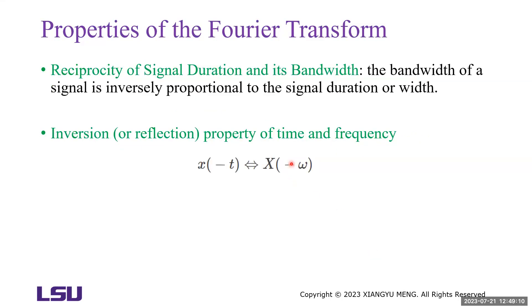The scaling property implies that if x(t) is wider, its spectrum is narrower, and vice versa — doubling the signal duration halves its bandwidth and vice versa. This suggests that the bandwidth of a signal is inversely proportional to the signal duration. This is called the reciprocity of signal duration and bandwidth.